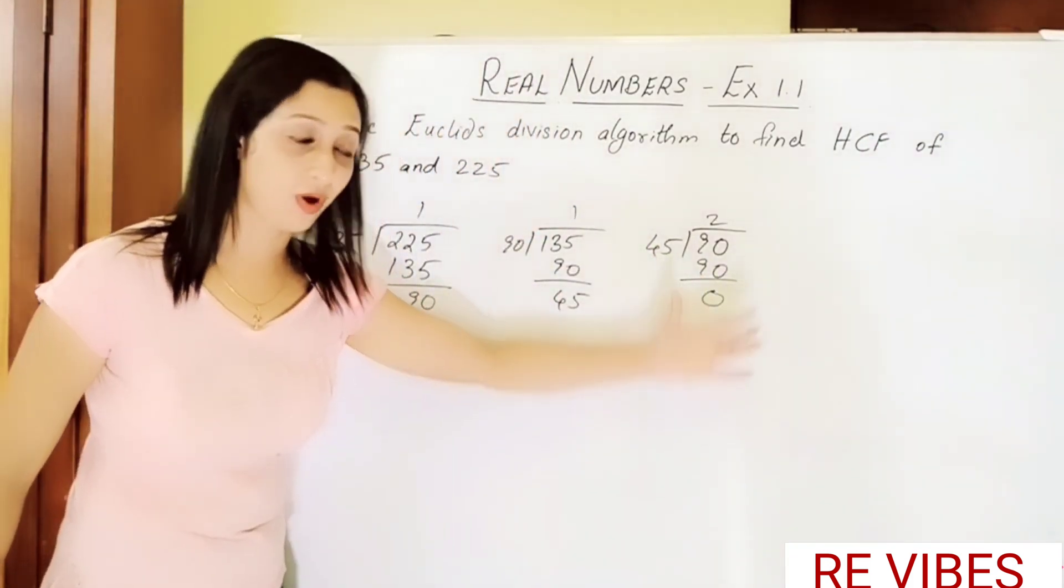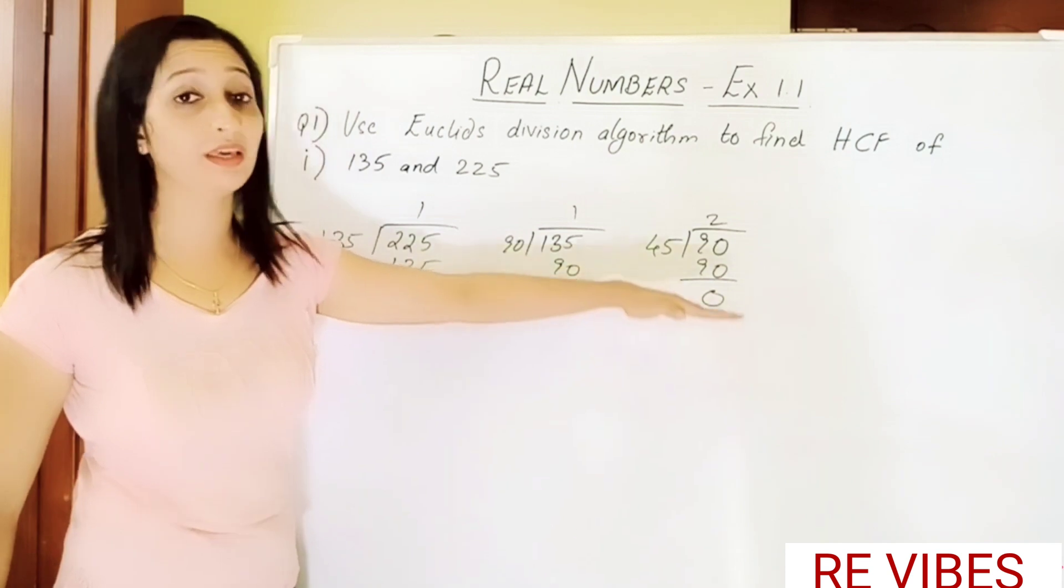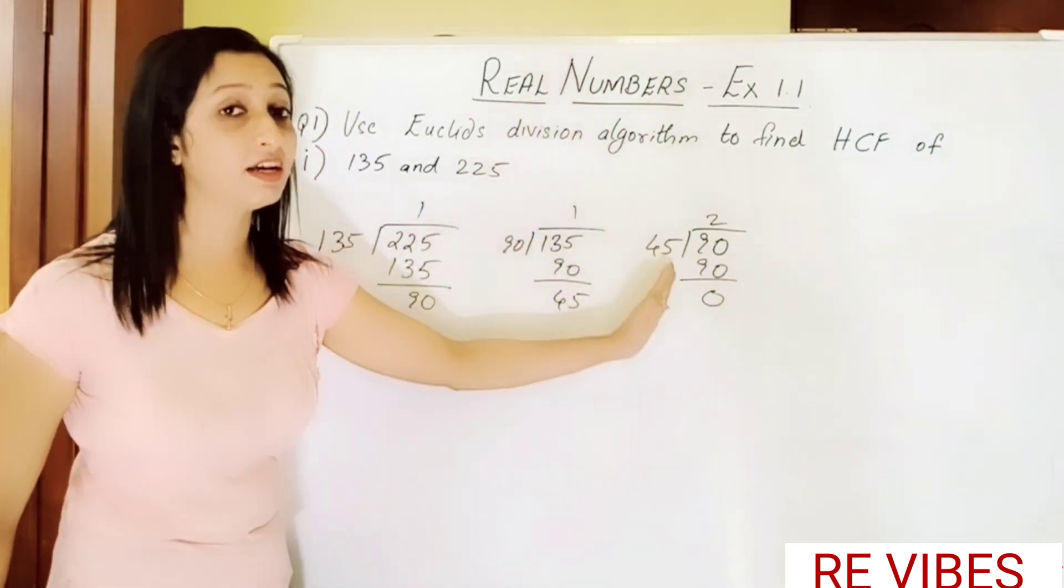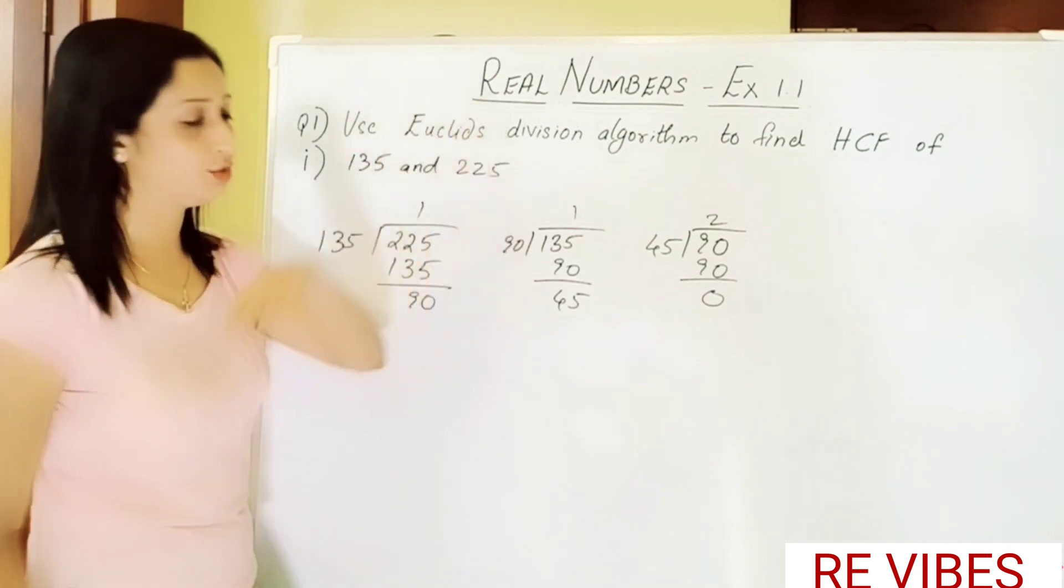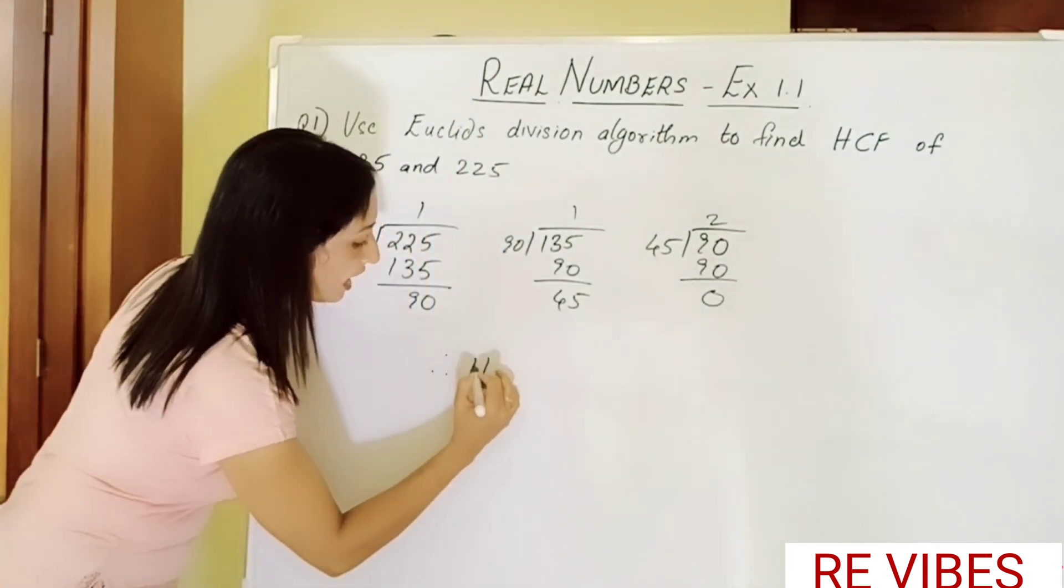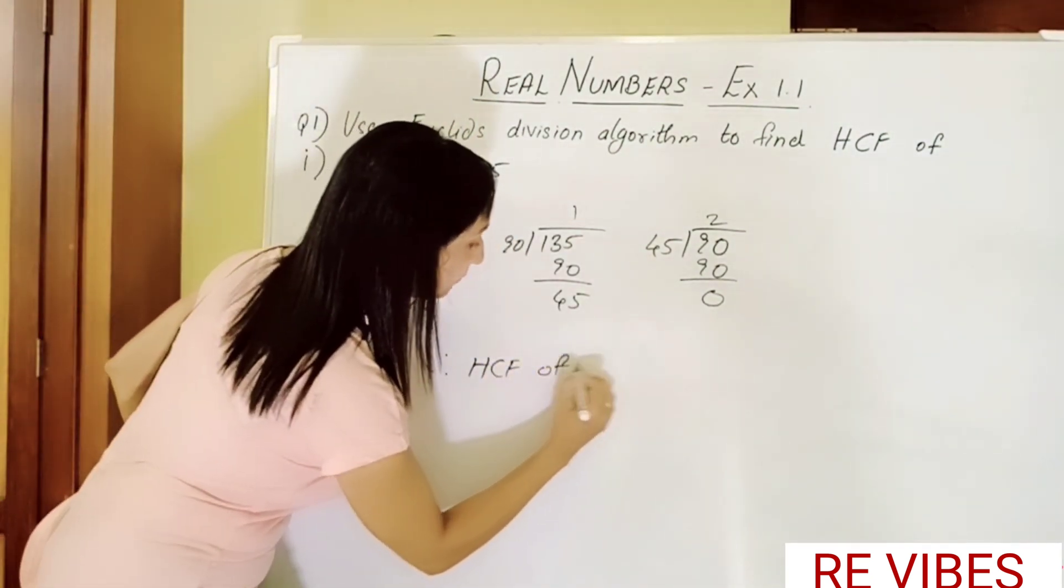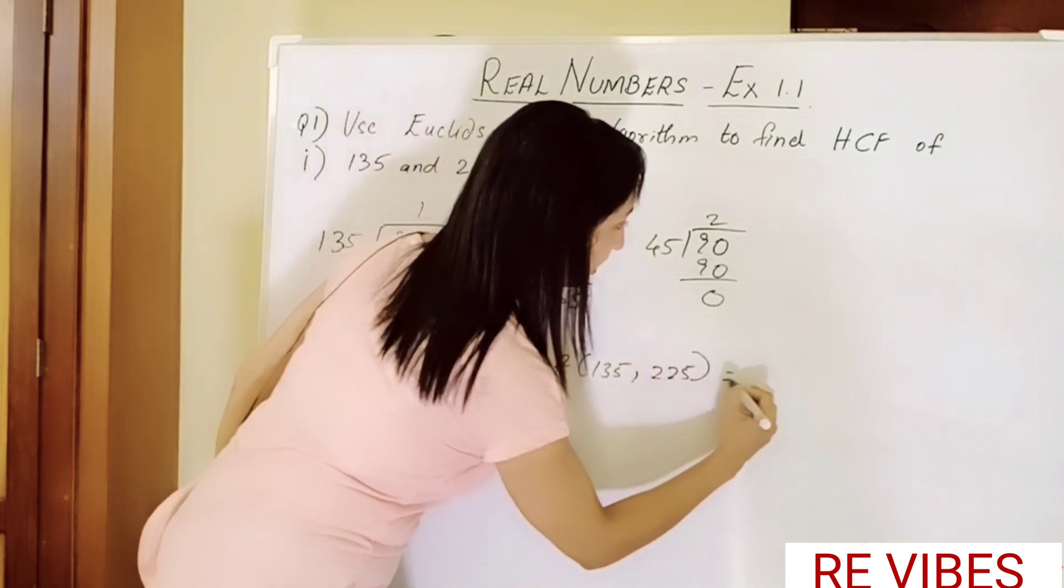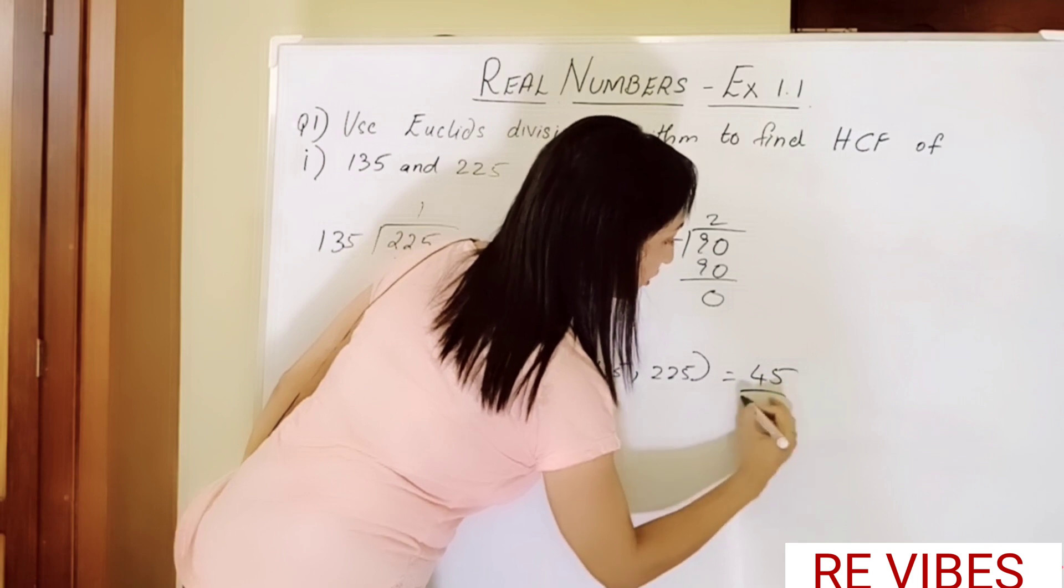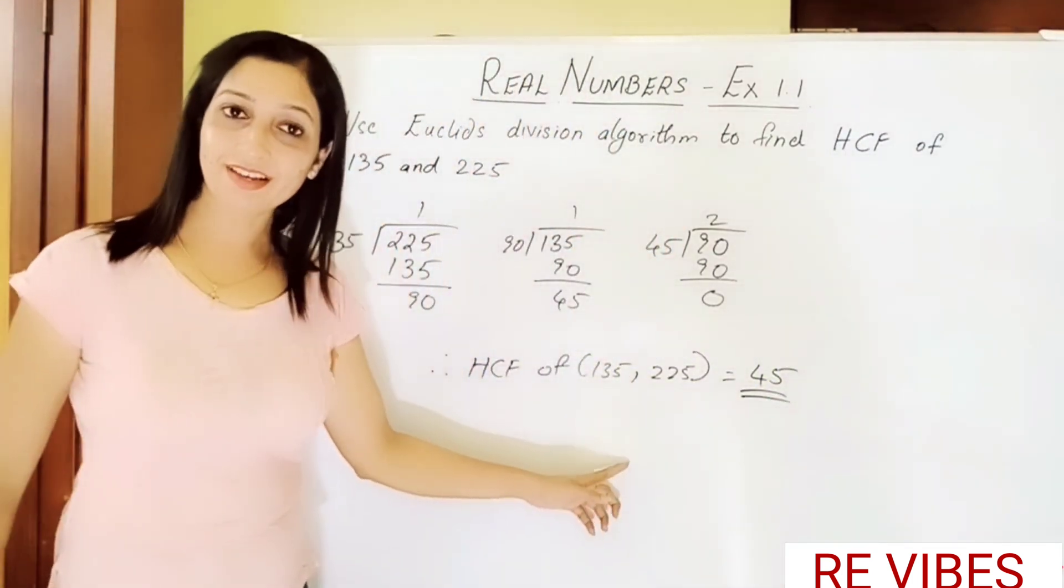Here we have got the remainder zero, and at the step at which we get the remainder zero, the divisor is the HCF of 135 and 225. Therefore, HCF of 135 and 225 is 45. So that was our first answer.